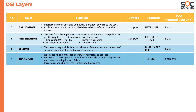Layer 4 is the transport layer. It provides reliable message delivery from process to process and ensures that messages are transmitted in the order in which they were sent, with no duplication of data. It is also responsible for error control and flow control. The entire TCP/UDP protocol suite works at the transport layer. The data is in the form of segments.